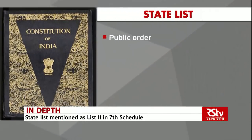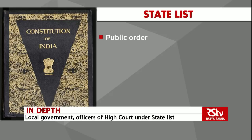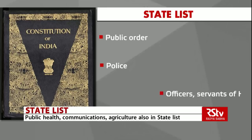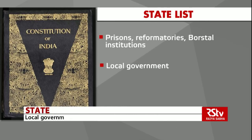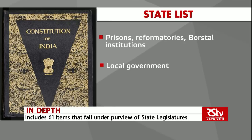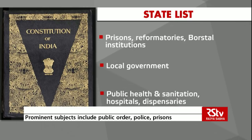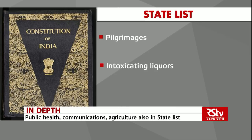Some of the prominent subjects mentioned in the state list include public order, but not including the use of any naval, military or air force or any other armed force of the union. The police officers and servants of the high court. Prisons, reformatories, borstal institutions and arrangements with other states for the use of prisons and other institutions. Local government, which includes the constitution and powers of municipal corporations, improvement trusts, district boards, mining settlement authorities and other local authorities. Public health and sanitation which includes hospitals and dispensaries. Pilgrimages other than pilgrimages to places outside India. Intoxicating liquors, which includes the production, manufacture, possession, transport, purchase and sale of intoxicating liquors.